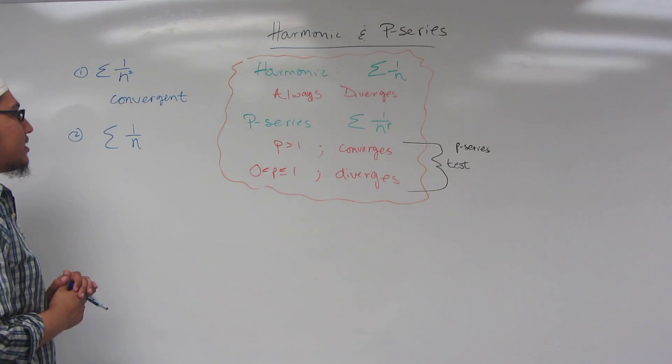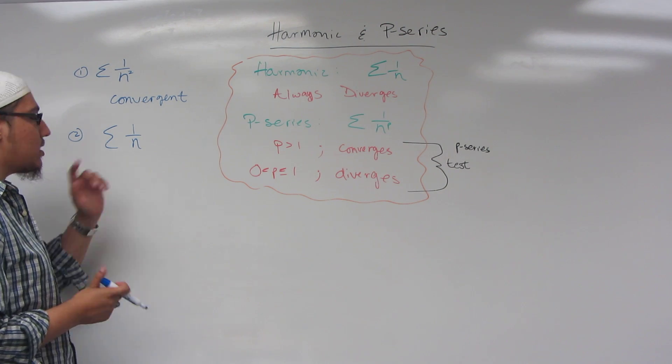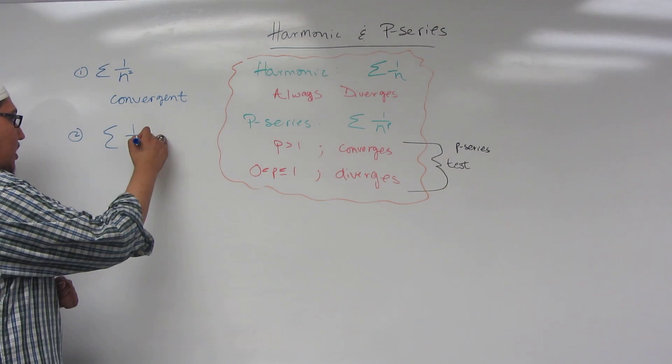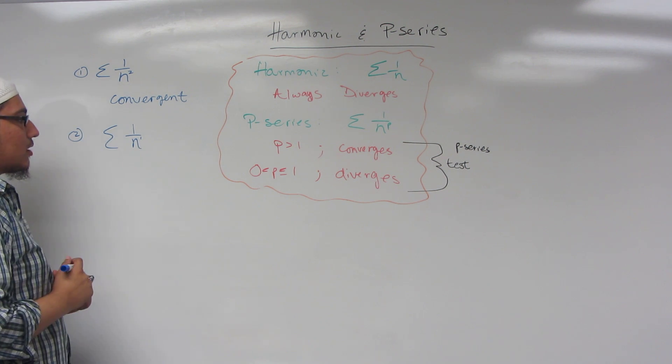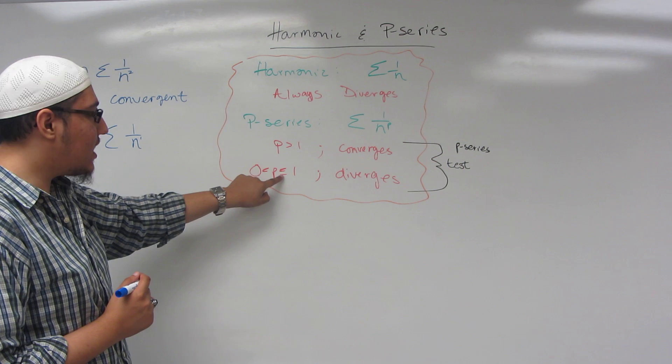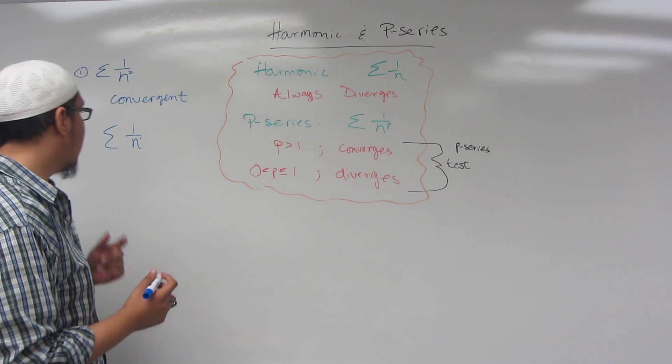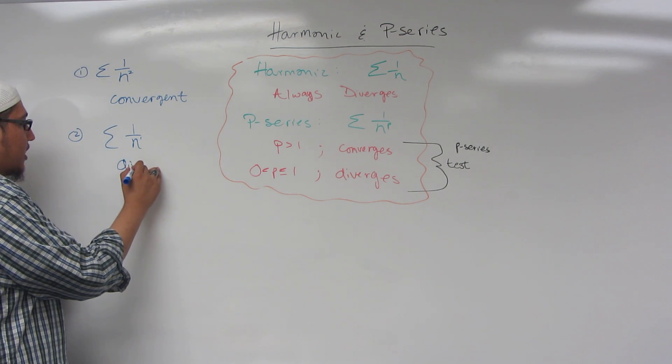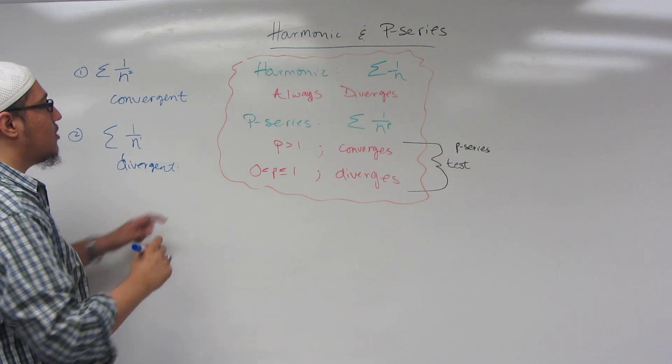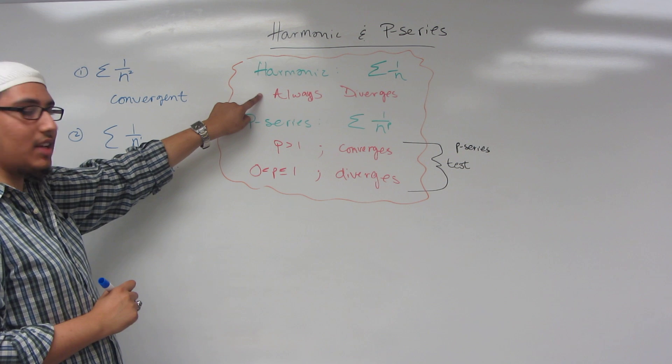And why is it a p-series? Well does this have an exponent? Yes it does. The exponent there happens to be 1. And if your exponent is 1, if p is less than or equal to, equal to being the key, your series is divergent. And that's exactly why the harmonic series always diverges.